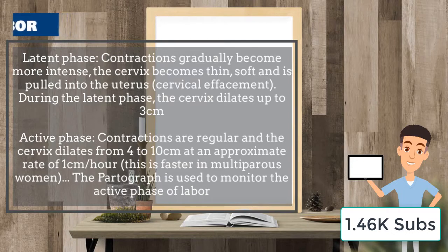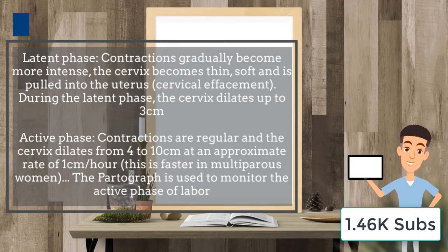In the active phase, the contractions become more regular and the cervix dilates from four to ten centimeters at an approximate rate of one centimeter per hour. This is much faster in multiparous women. Remember that the partograph can be used to monitor the active phase of labor.